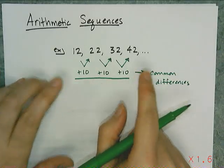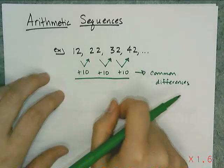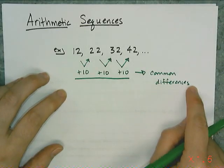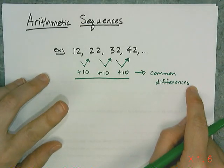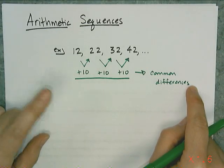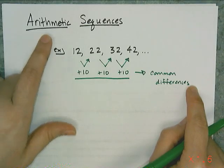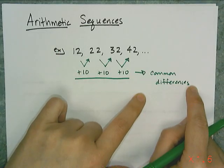That's what makes it arithmetic. And this is the common difference, not a common ratio. Geometric sequences have common ratios; arithmetic ones have common differences.